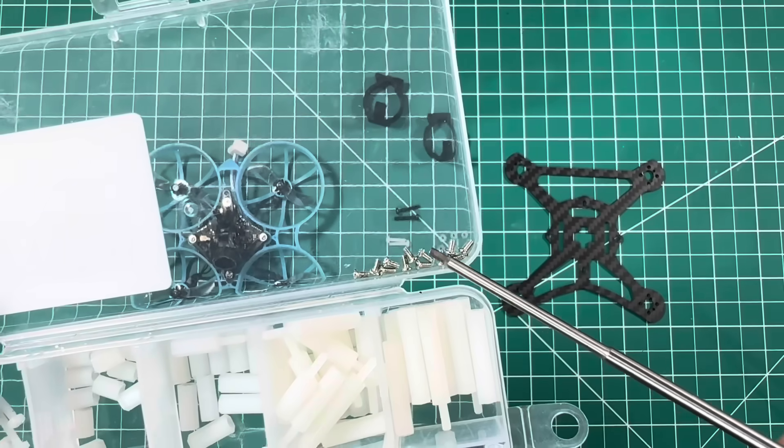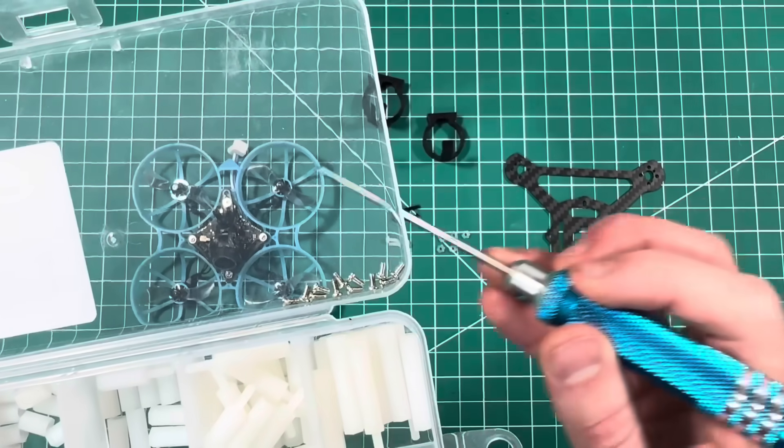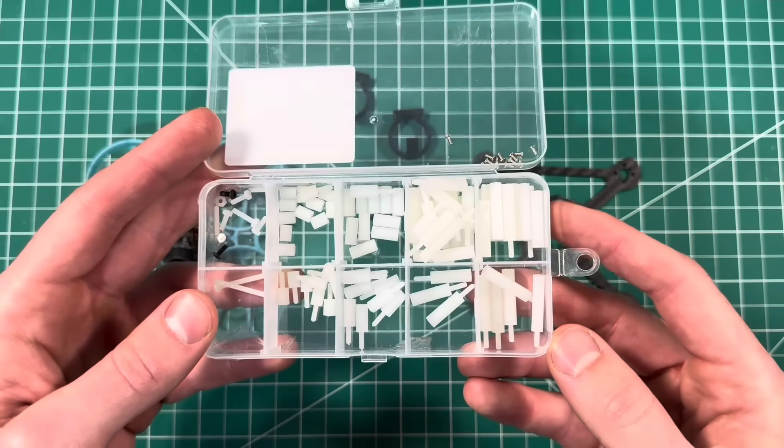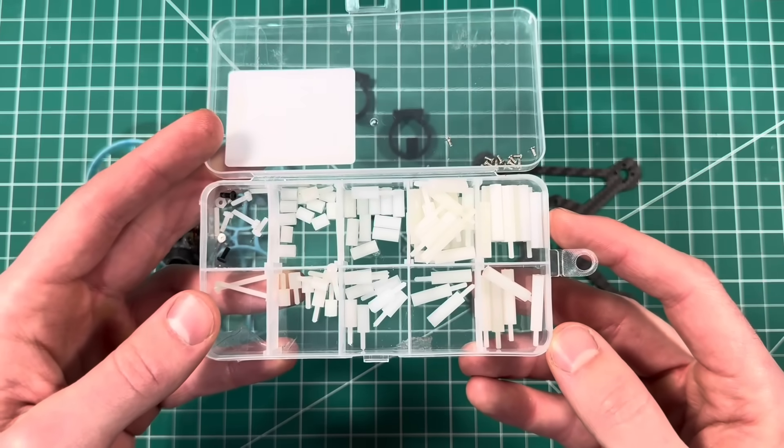These are 1.4 millimeter motor mount screws. I switched them straight from my Tiny Whoop onto this frame. These bolt kits are pretty inexpensive and I'll link a couple down below that you can look at.